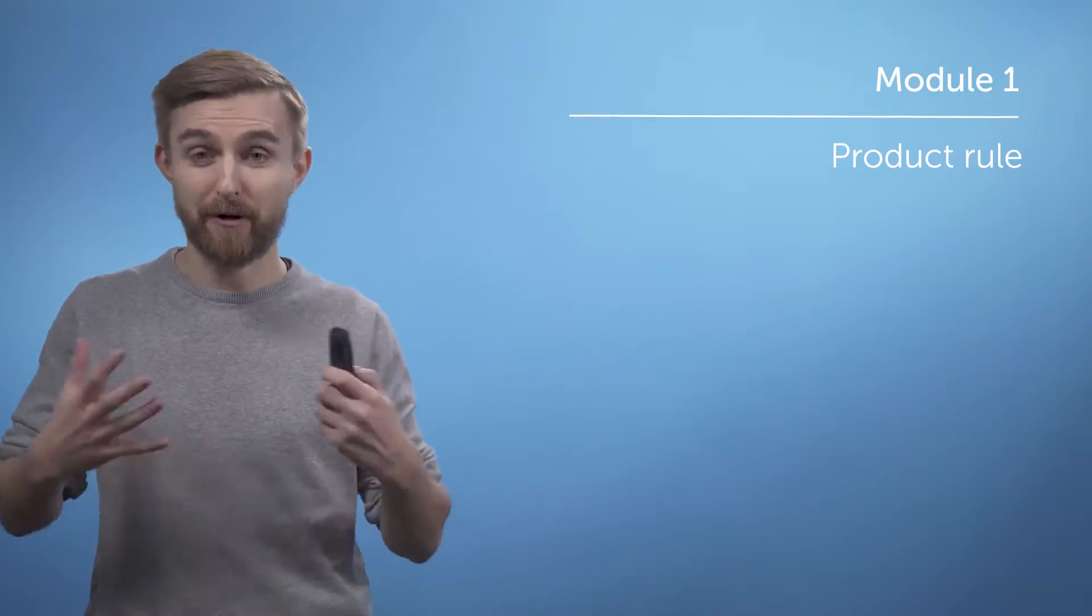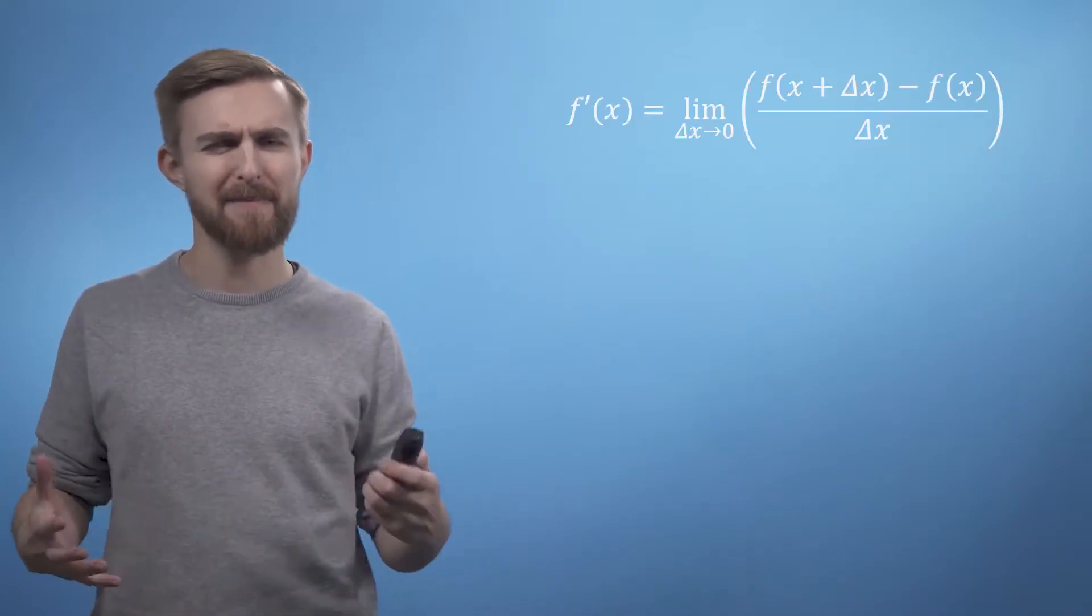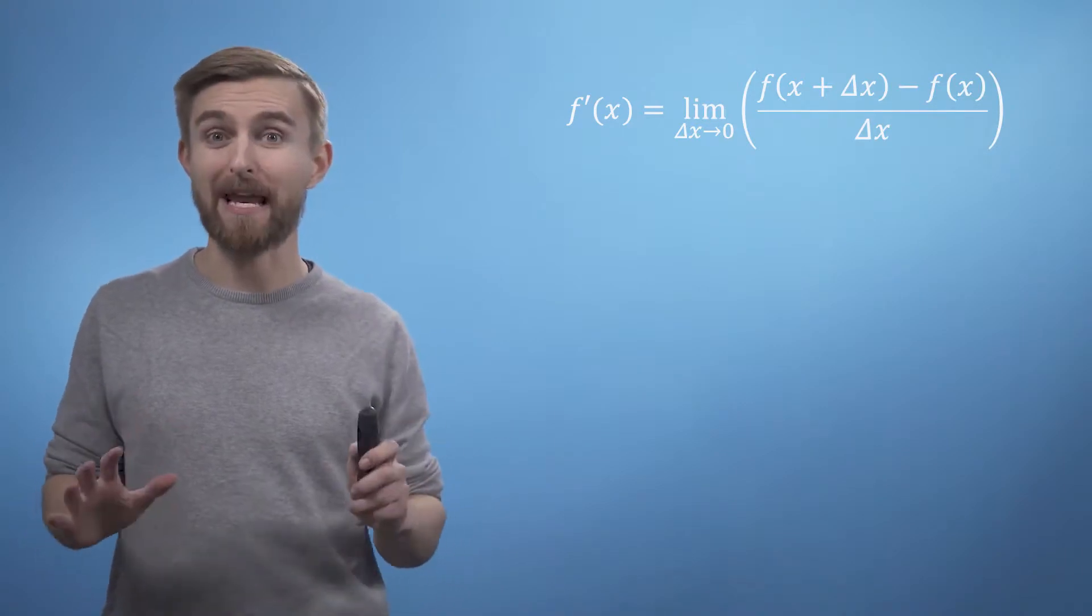However, mathematicians have found a variety of convenient rules that allow us to avoid working through the limit of rise-over-run operation whenever possible. So far we've met the sum rule and the power rule. In this video we will cover a convenient shortcut for differentiating the product of two functions, which sensibly enough is called the product rule.